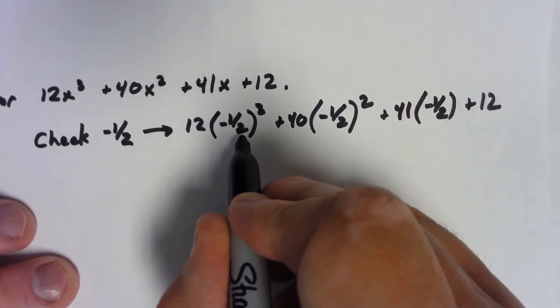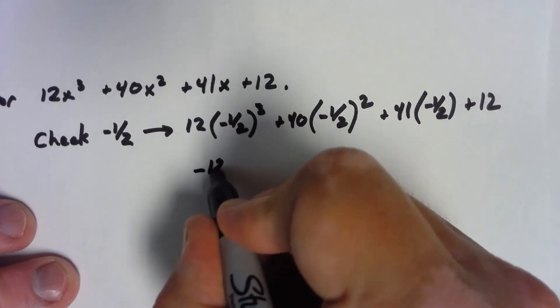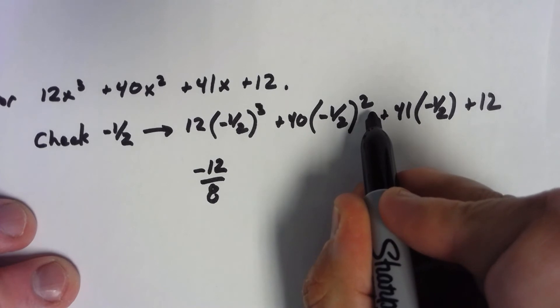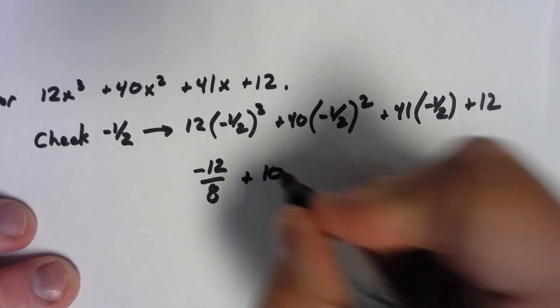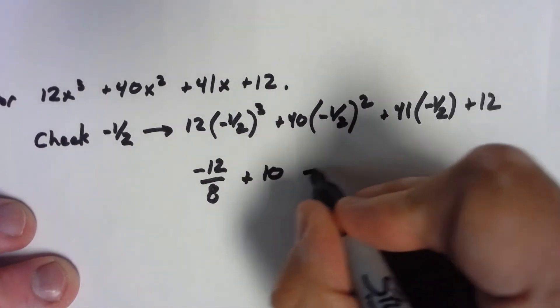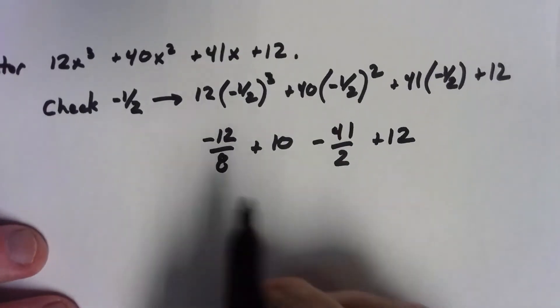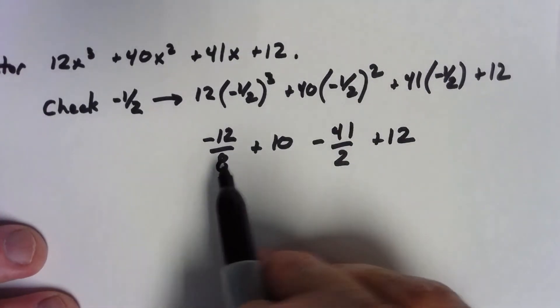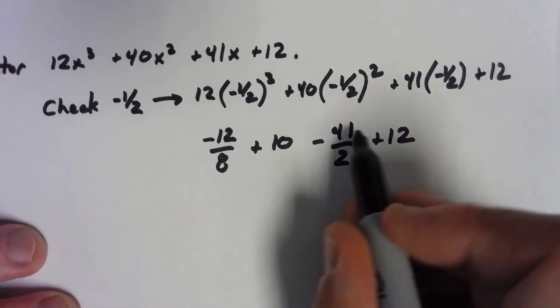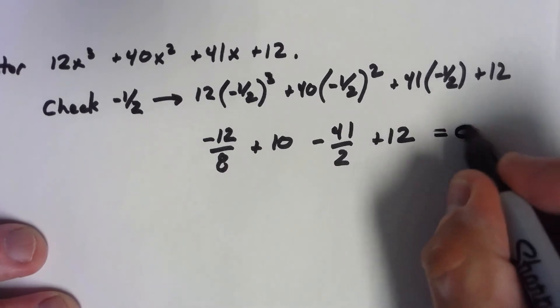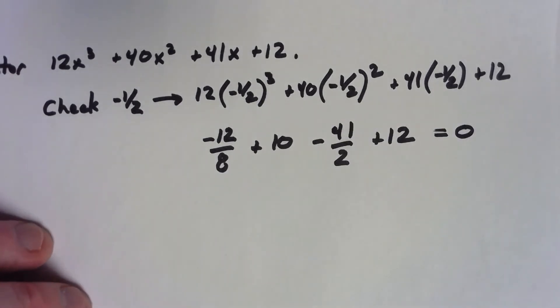So, that's 12 times negative one-half. Negative one-half squared is one-quarter times 40 is plus 10. Negative forty-one-halves plus 12. And so, we've got negative three-halves minus 41-halves is negative 44-halves is negative 22 plus the 10 and plus 12 gives me zero. Okay.